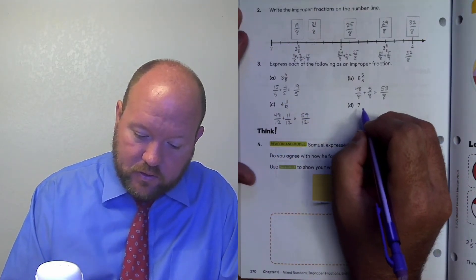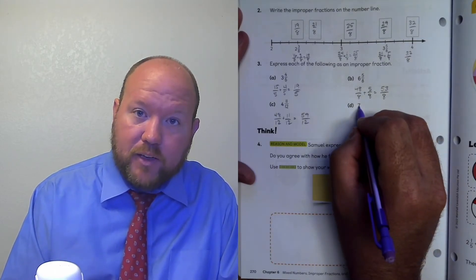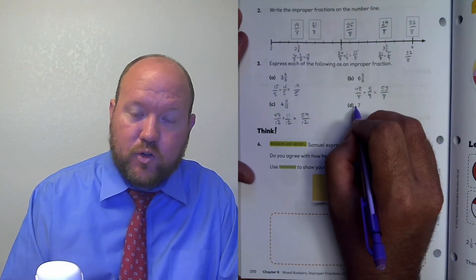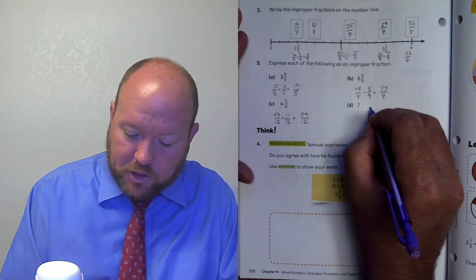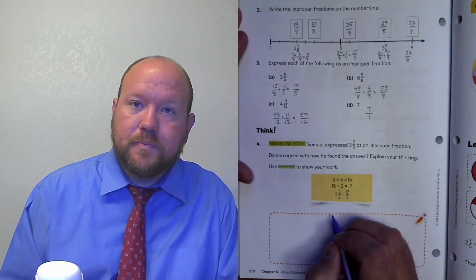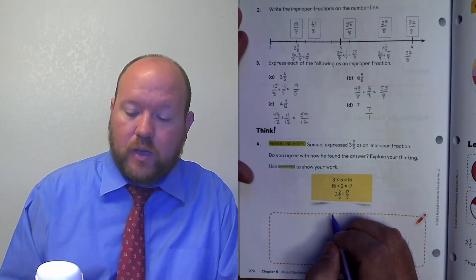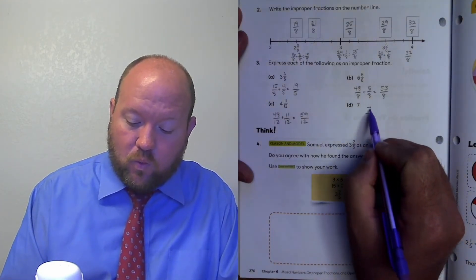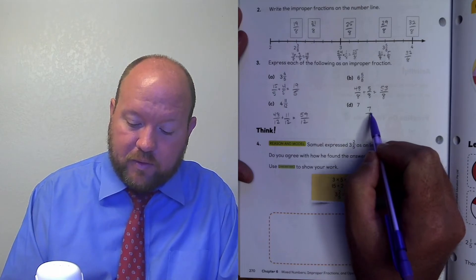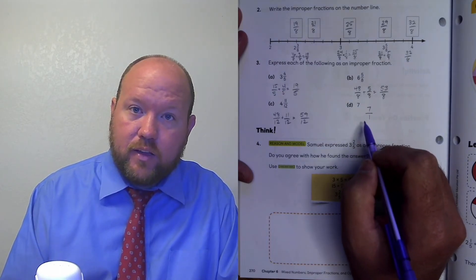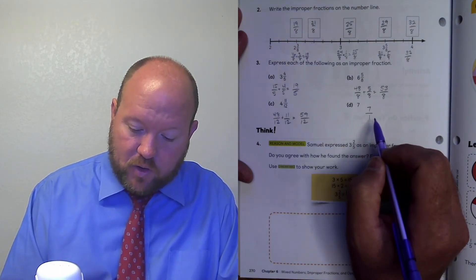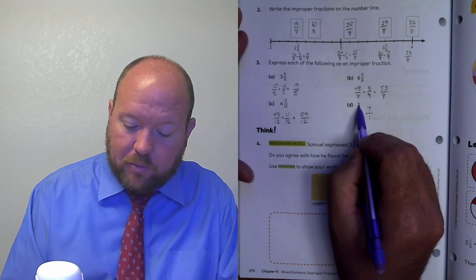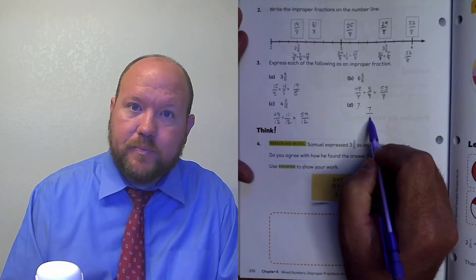This one I'm supposed to turn into an improper fraction. When I have a whole number that I want to turn into an improper fraction, I just put it over one. So this means I have seven ones — I have seven whole ones. Whenever we have a whole number and we want to turn it into an improper fraction, we just put a one underneath it.